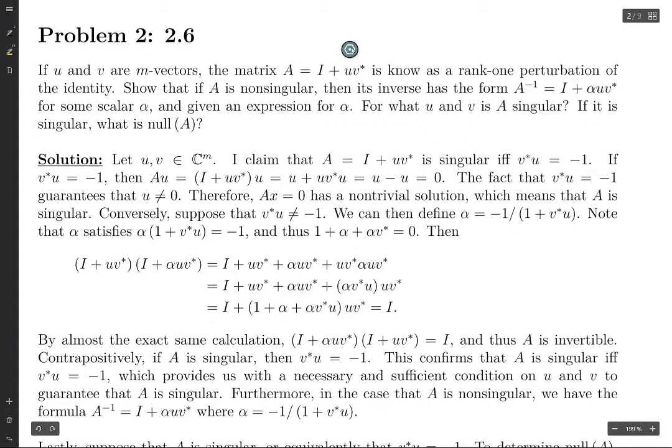It has rank one because all of its columns are just different multiples of the vector V or U, one of the two. I think it's V. Each column can be written as V times UI, or something like that. But I guess it's V star, so maybe it would be the complex conjugate of V.